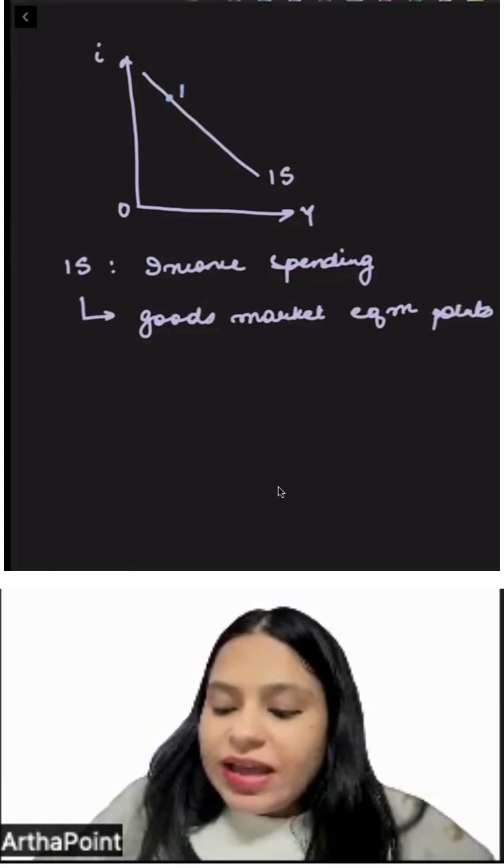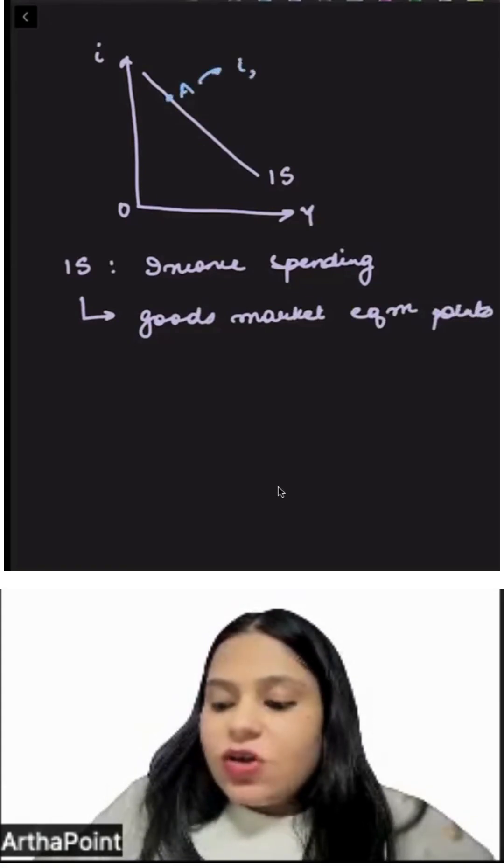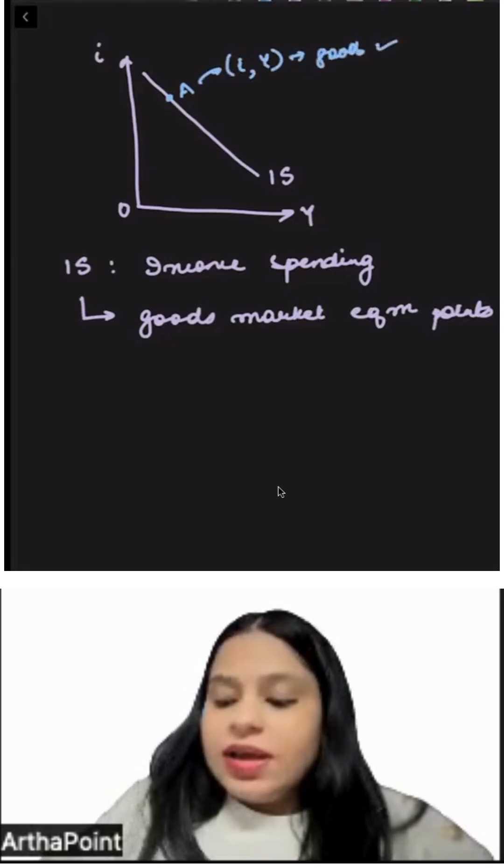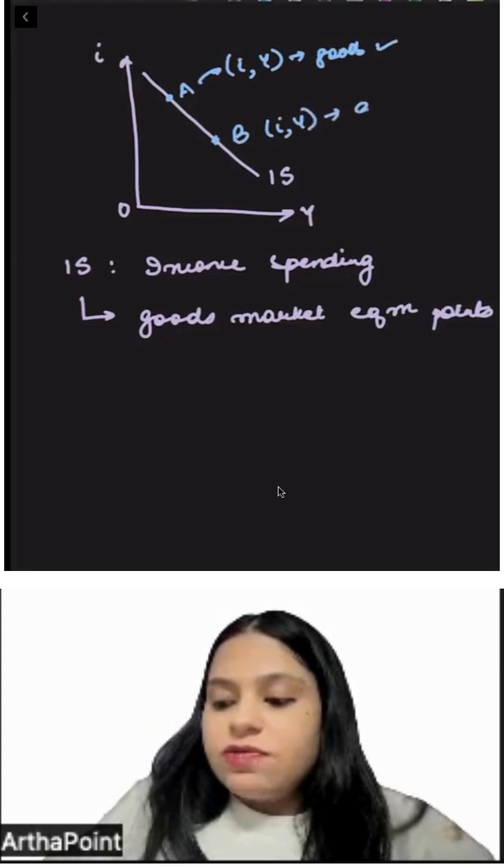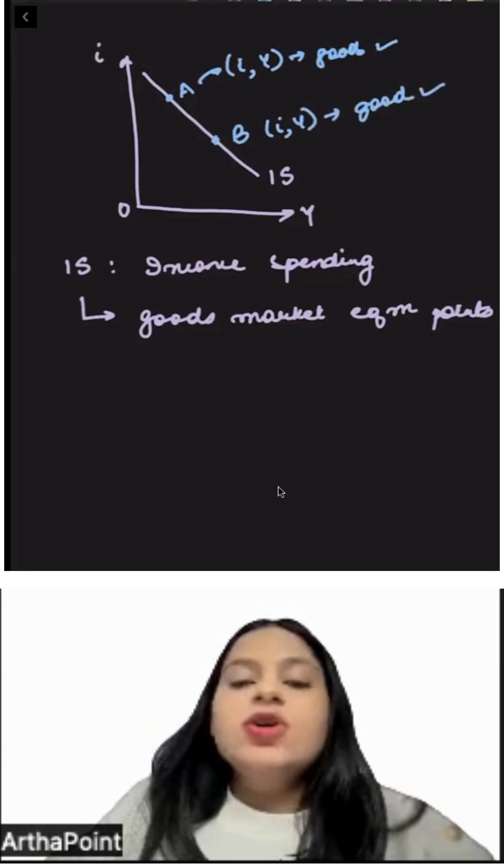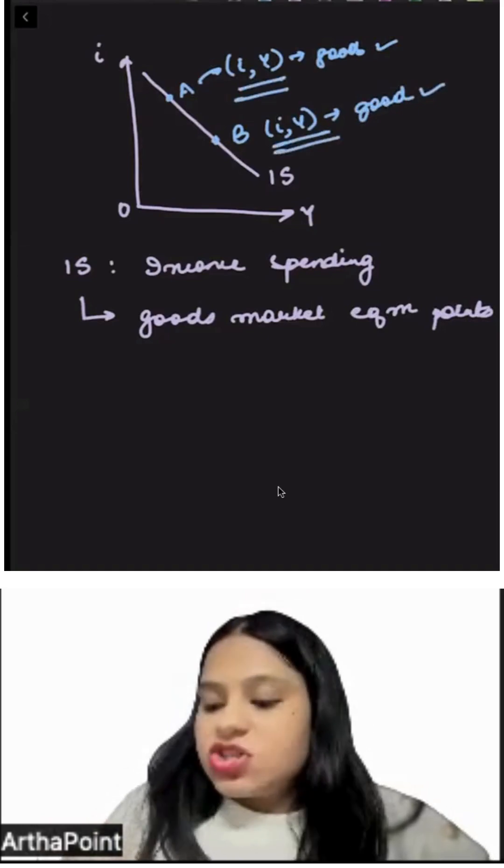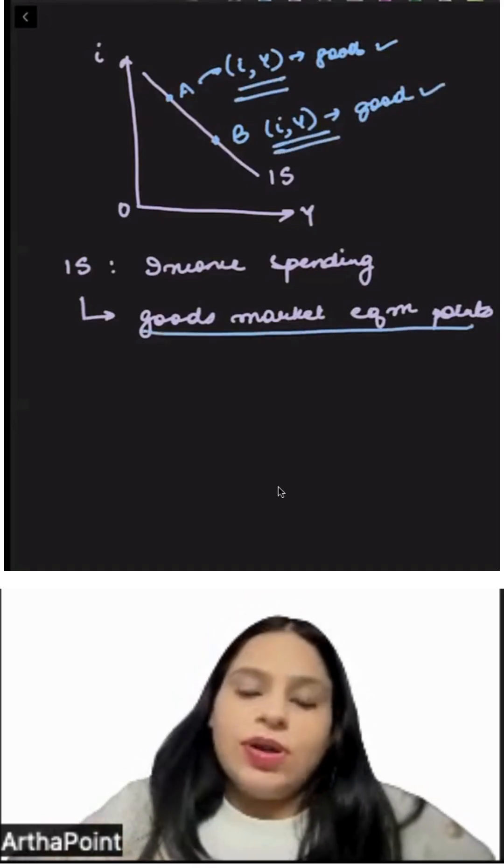If I take point B, all IY combinations where goods market is in equilibrium. So the IS curve shows all interest rate and output combinations such that the goods market is in equilibrium.